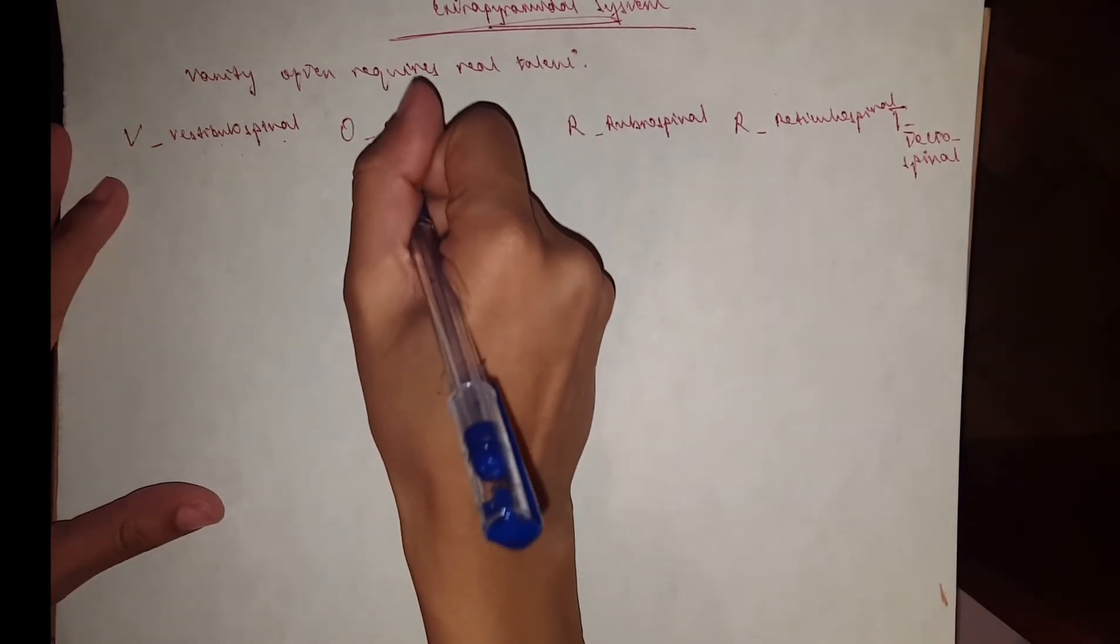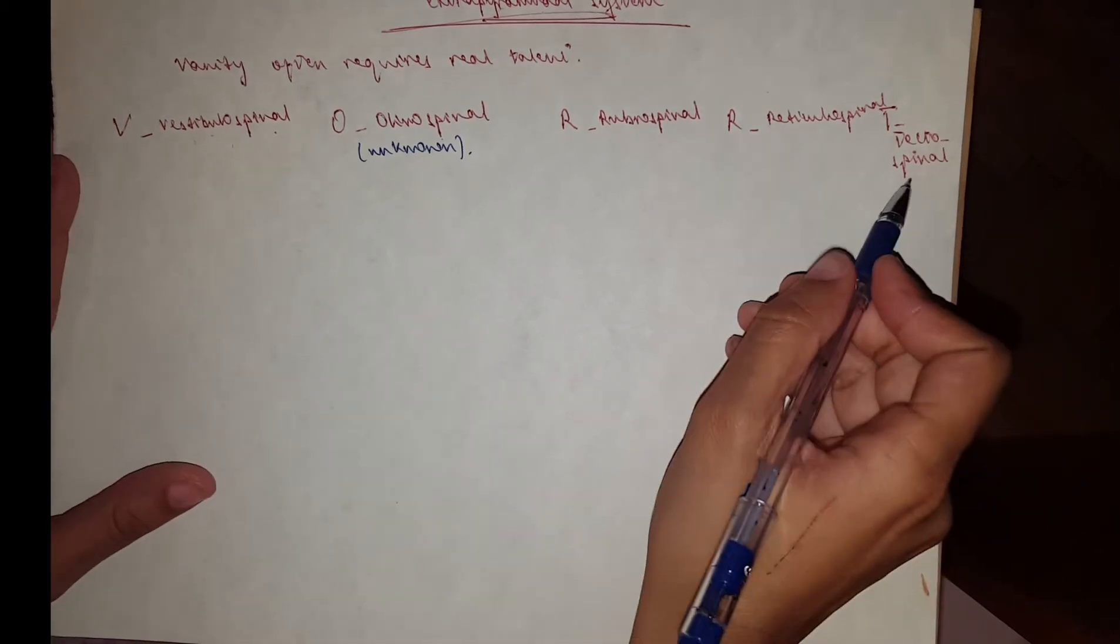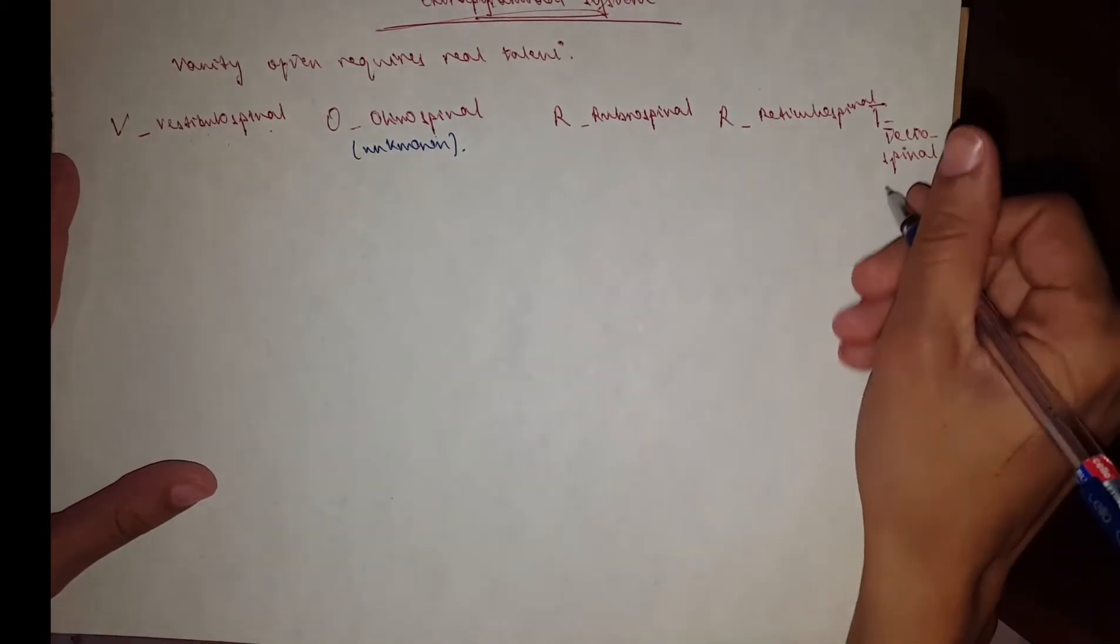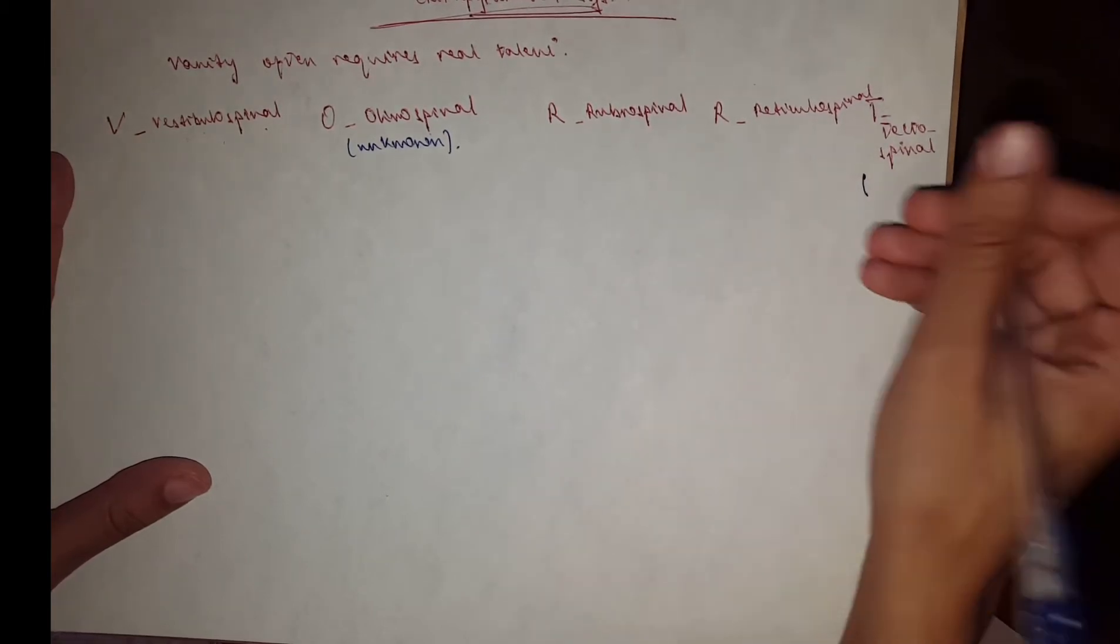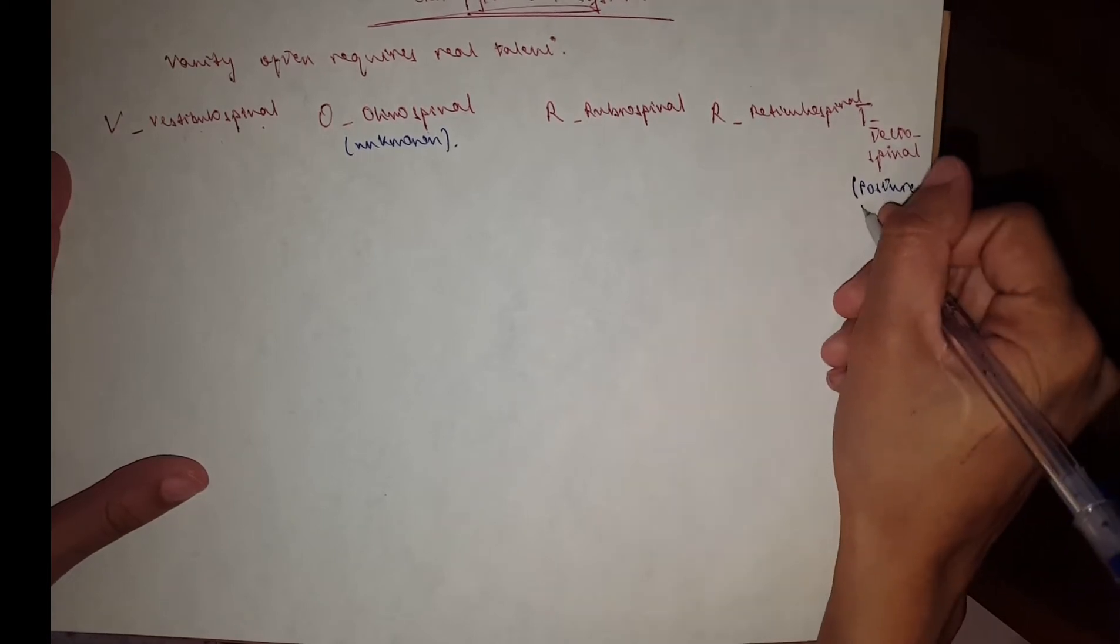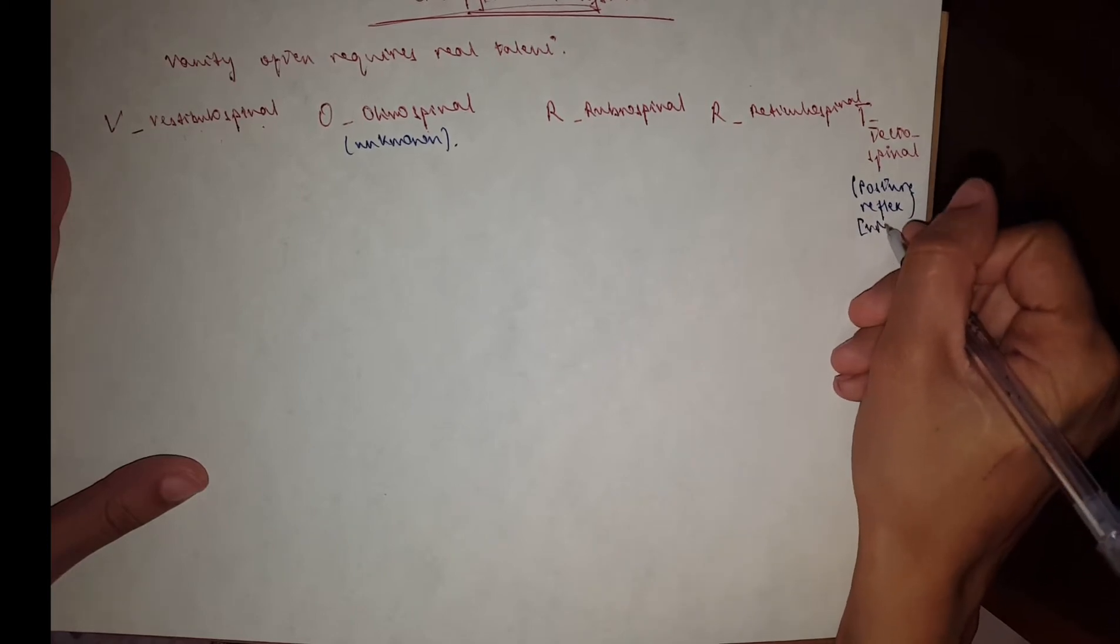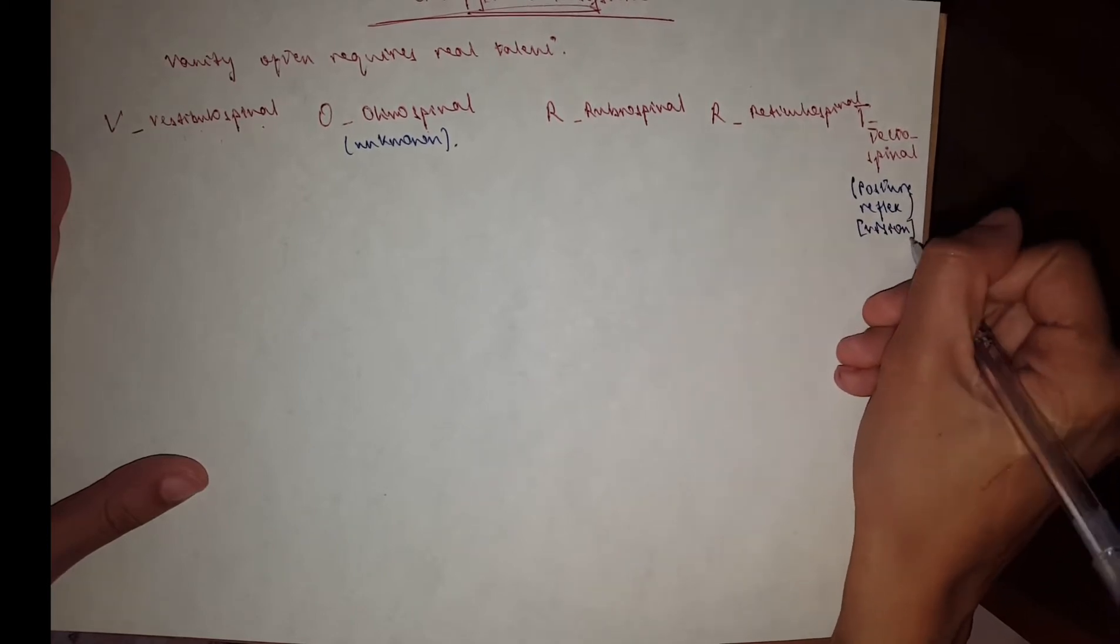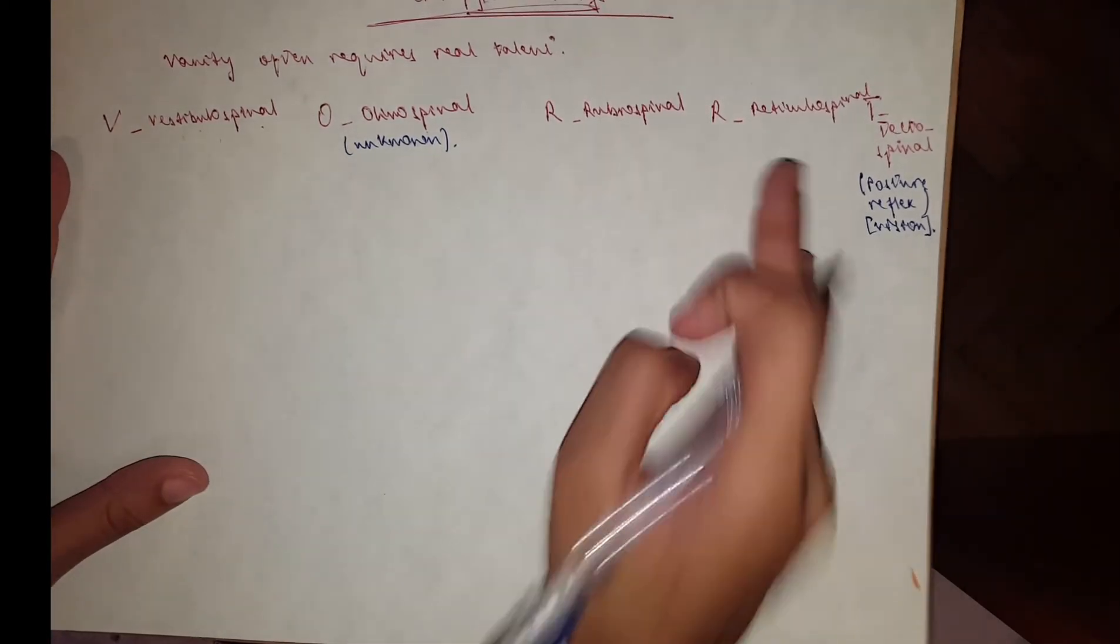Not much is known about the olivospinal, so it is unknown. We're going to cross this one out. The tectospinal is not much noted in humans, it's mostly in animals but its function is for posture reflexes of vision. We're going to cross this out too because it's mostly in animals. We're going to concentrate on the vestibulospinal, rubrospinal, and reticulospinal.